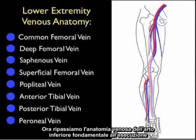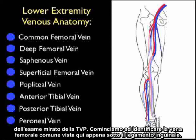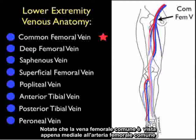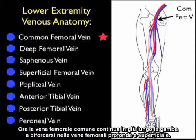Let's now review the lower extremity venous anatomy integral to performance of the focused DVT examination. We begin by identifying the common femoral vein seen here just below the inguinal ligament. Notice that the common femoral vein is seen just medial to the common femoral artery. The common femoral vein continues down the leg to bifurcate into the deep and superficial femoral veins.